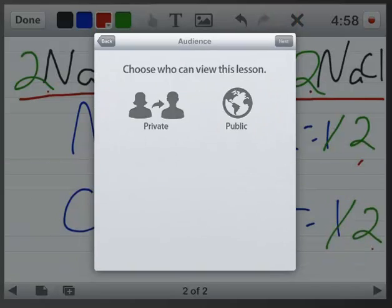Now, choosing who can view this lesson, if I only want myself to be able to see it, I'll choose private. But, if I'm going to try to put a link to this lesson on my web page or send a link to my students to go see, I'm going to have to make it public. So, I'm going to tap that.